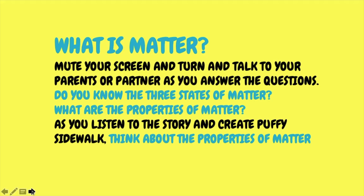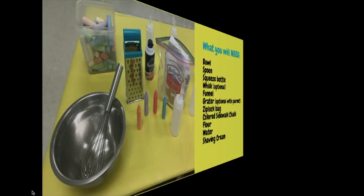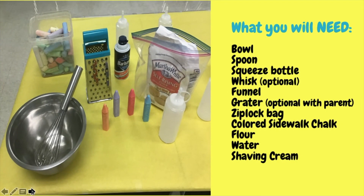Boys and girls, as you listen to the story and create puffy sidewalk chalk, think about the properties of matter. What you will need: bowl, spoon, squeeze bottle, whisk, funnel, grater (optional, only with parent), Ziploc bag, colored sidewalk chalk, flour, water, and shaving cream.